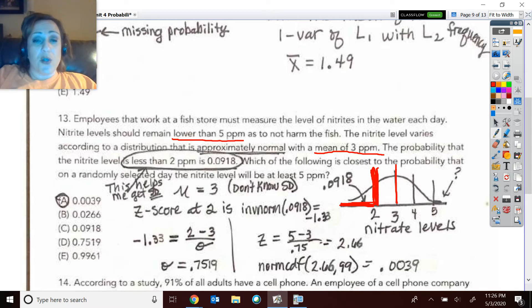So I can do that inverse norm of the area below is the z at that spot. So that was the key. If you knew to say inverse norm of the area below is the z at 2 parts per million, then that's negative 1.33.